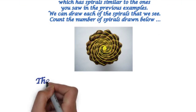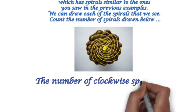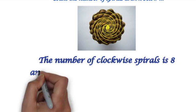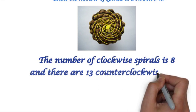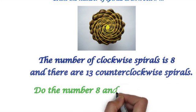The number of clockwise spirals is 8, and there are 13 counterclockwise spirals. Do the numbers 8 and 13 sound familiar?